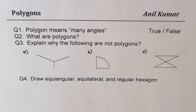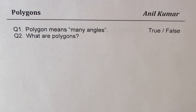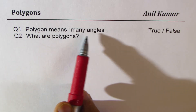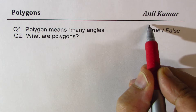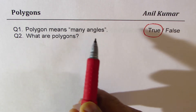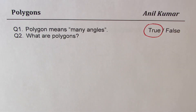You can pause the video, answer these four questions, and then look into my suggestions. Let's begin with the basic understanding of polygons. Polygon means many angles — many of my students think polygon means many sides, since we name polygons based on sides. But this statement is actually true. The correct answer is true. It really means many angles. 'Poly' means many and 'gon' is for angles.